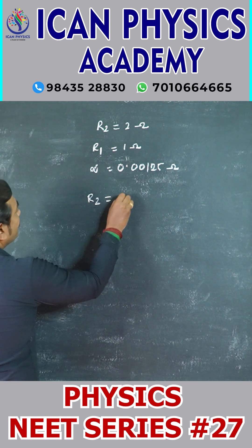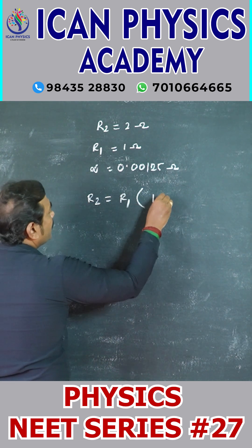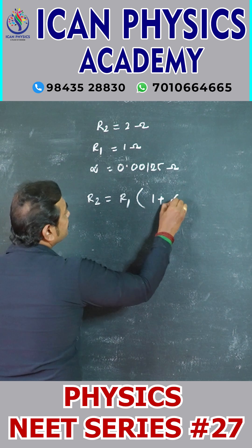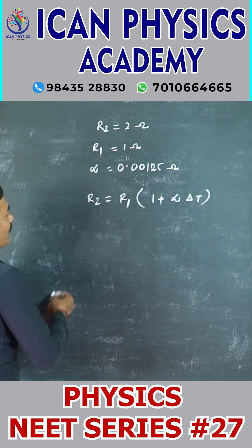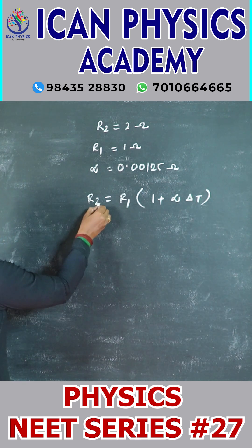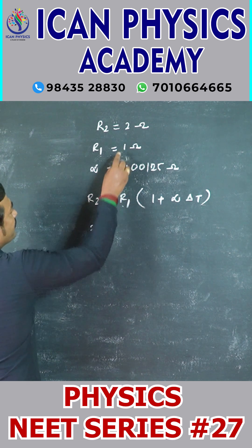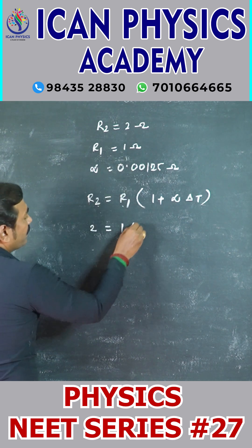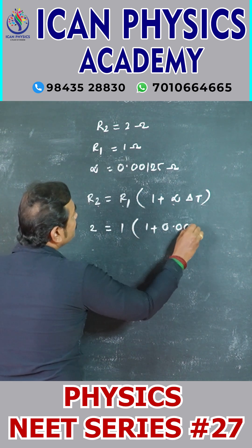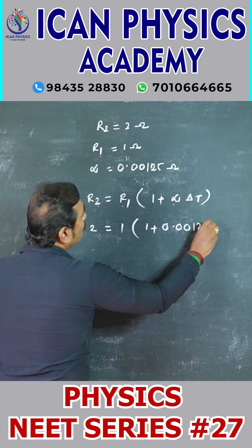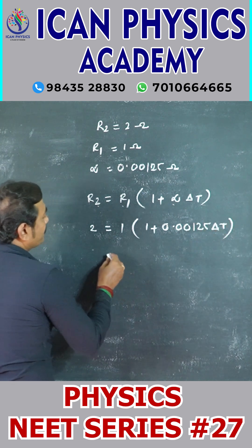R2 equals R1 into 1 plus alpha into delta T. R2 is 2, R1 is 1, into 1 plus alpha 0.00125 into delta T.